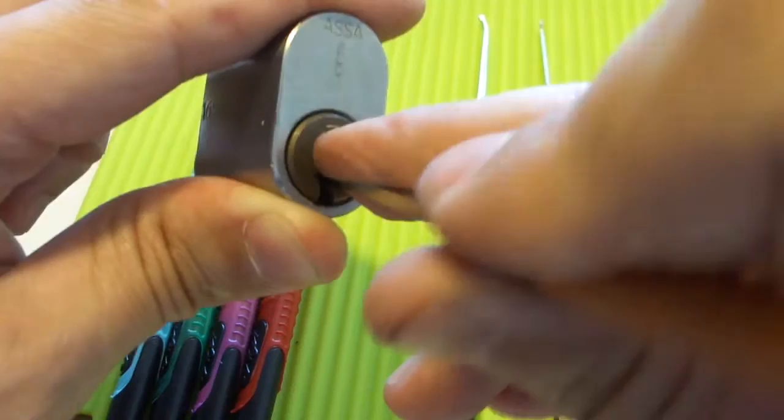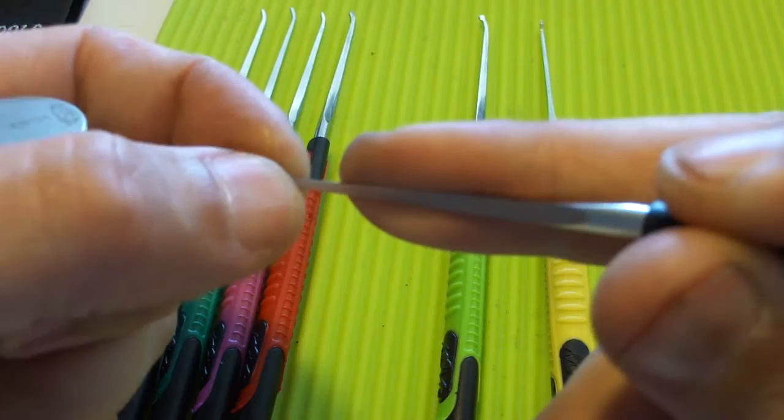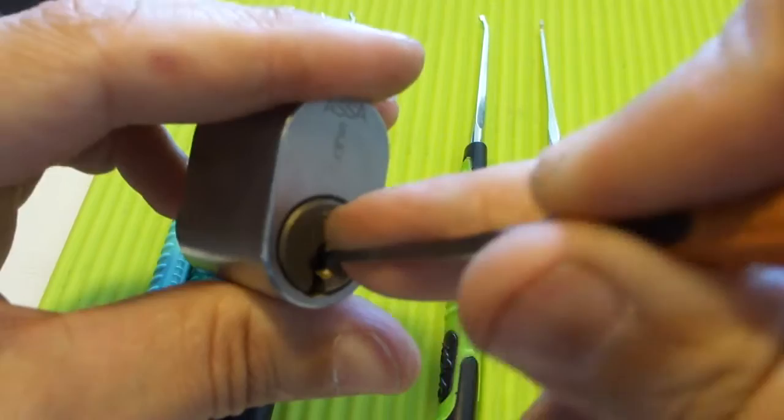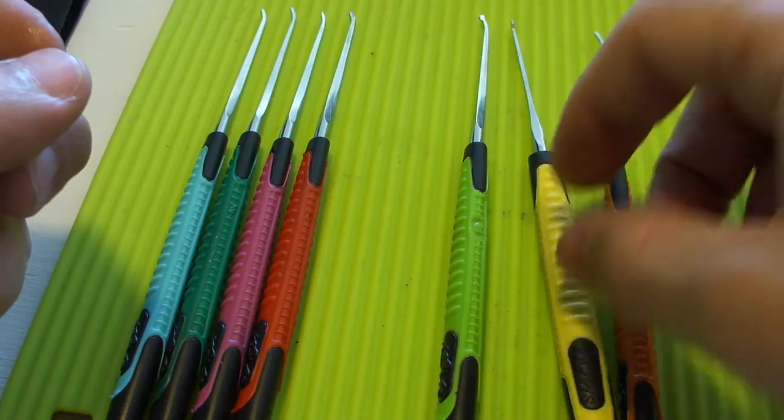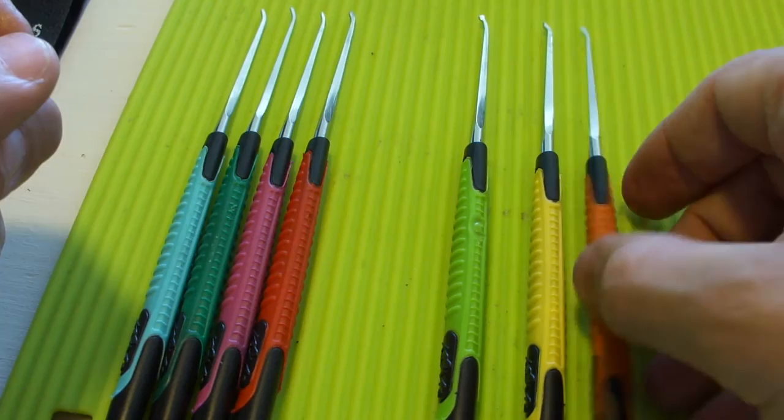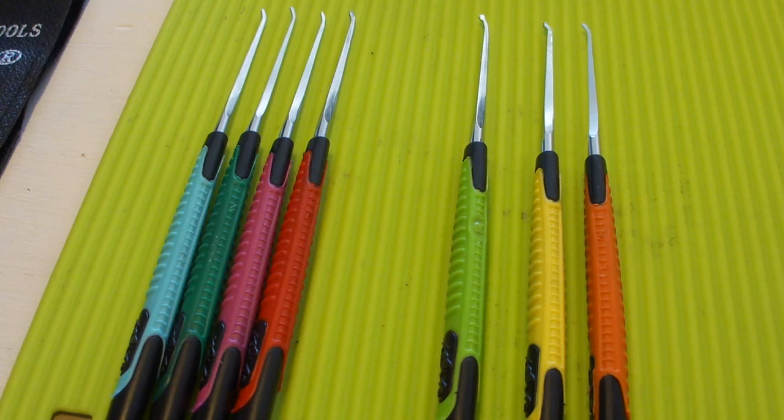And the shaft is a bit too long as well, so that takes away some of the feel. So this Klom kit that I paid about $35 for is essentially a piece of junk. Don't buy it. And I'll put the link down in the description just so you know.